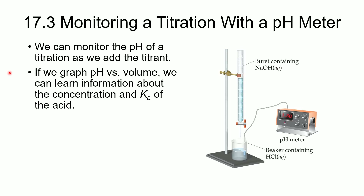In this section, Section 17.3, we will be looking at titrations and how the pH changes over the course of the titration. We've got hydrochloric acid, which is a strong acid, being titrated with sodium hydroxide. Typically we put an indicator in to tell us when we've reached the equivalence point. However, we can measure the pH as we add our titrant, and by monitoring and graphing it, we can get information about not only the concentration but the Ka of the acid.